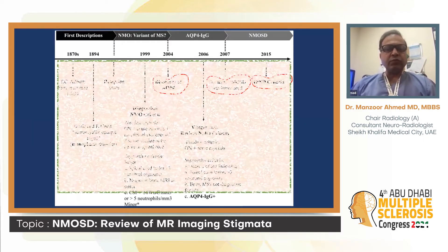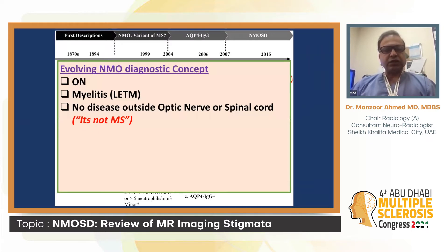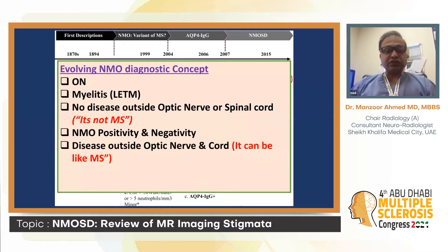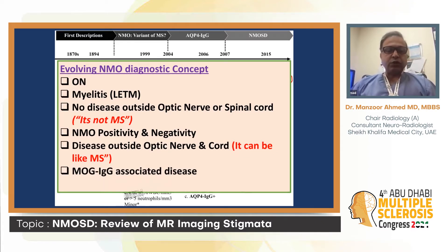In a nutshell, there has been an evolving NMO diagnostic concept. Initially, we thought it's optic neuritis and myelitis, and we used to think it's not MS, although many people thought it was a variant of MS. Then came NMO seropositivity, and the concept changed — we started thinking it can be like MS. Then came MOG-associated disease and the NMOSD 2015 criteria. Now we call it NMOSD, with a small contribution by MOG disease.